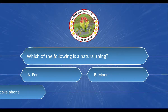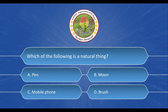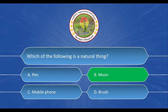Which of the following is a natural thing? The options are: a) pen, b) moon, c) mobile phone, d) brush. The correct answer is option b) moon.